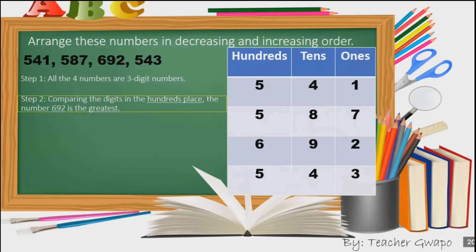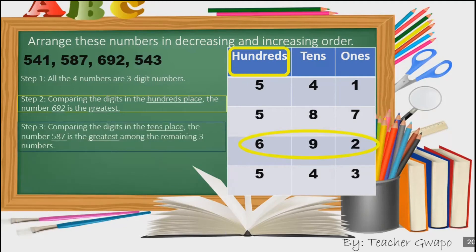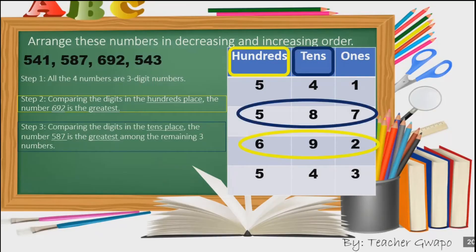In step number two, comparing the digits in the hundreds place, the number 692 is the greatest number in the hundreds place. In step number three, comparing the digits in the tens place, the number 587 is the greatest among the remaining three numbers.